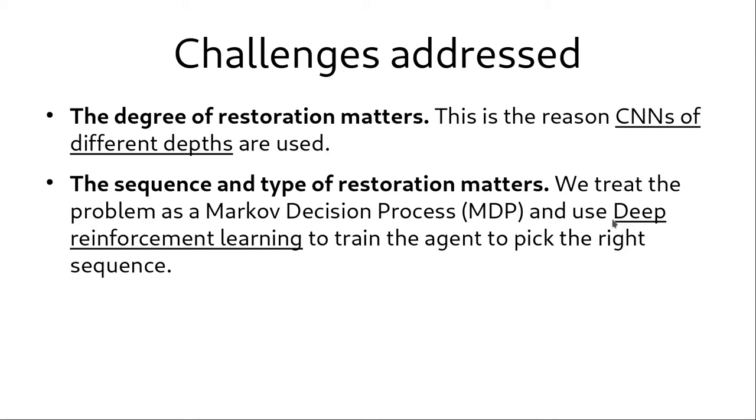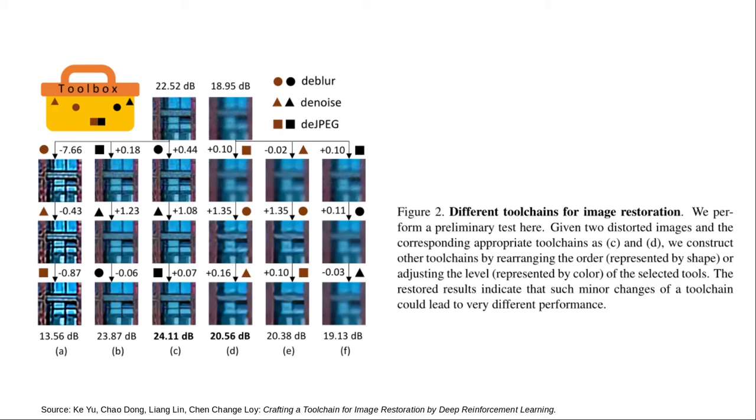When using a toolbox of tools for image restoration, the sequence of tools that are picked, which is the tool chain, and the kind of tools that are picked are very important. To train an agent to pick the right kind of tool chain appropriately for an input image, we treat the decision making problem as a Markov decision process and we use deep reinforcement learning to train the agent. From this, we can see that choosing the appropriate tools will result in very different results. The kind of tools used and the degree of degradation, both of them play a very important role in picking the right tool chain.